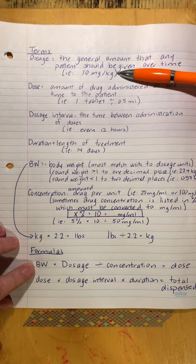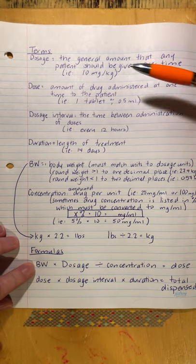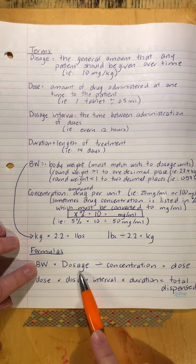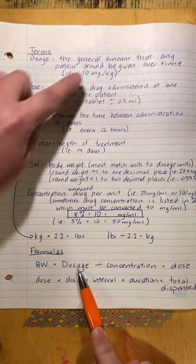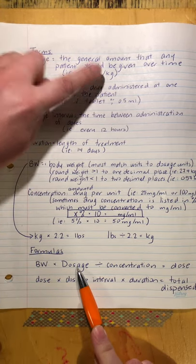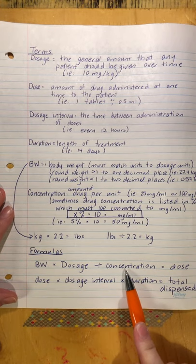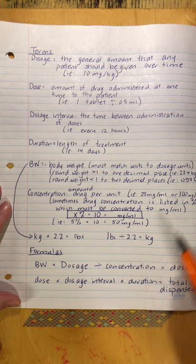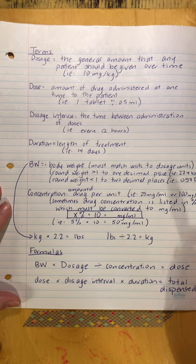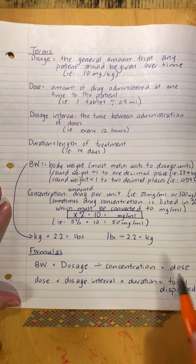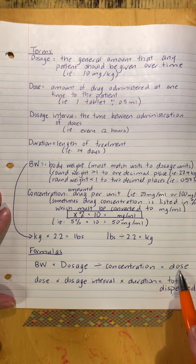So if the body weight is in kilograms and the dosage is in kilograms, we're good to go. Then we divide by the concentration. Whatever the resulting number is, that's the dose.